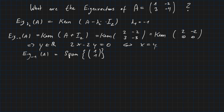So y is any real number, and x must be exactly y. This is a one-dimensional kernel, spanned by the vector (1, 1). You can verify it: multiplying (1, 1) as a vector with the matrix results in the same vector times minus 1, which is our eigenvalue.